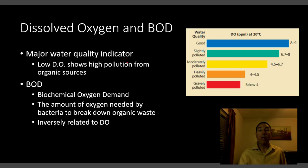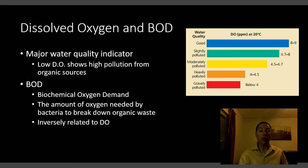Another major indicator of water quality is dissolved oxygen — the amount of dissolved O₂ molecule in the water, separate from the oxygen in the H₂O molecule itself. Dissolved oxygen is what all aquatic organisms breathe. Pollution from sewage or other organics reduces oxygen because bacteria and fungi breaking down organic waste use oxygen through normal cellular respiration. Their oxygen use is called BOD — Biochemical Oxygen Demand — the amount of oxygen needed by bacteria or fungi to break down organic waste. Dissolved oxygen and BOD are inversely related: high dissolved oxygen means low BOD, and high BOD means low oxygen levels.